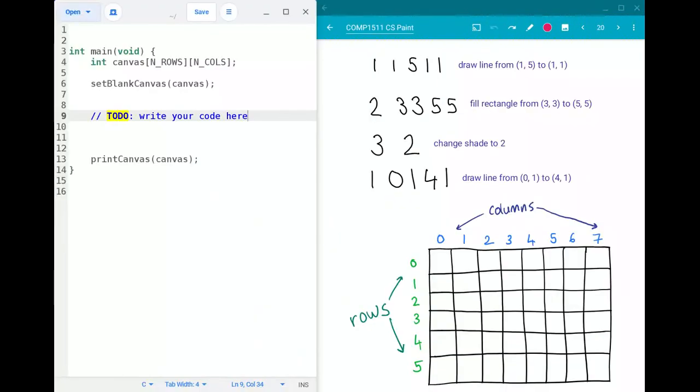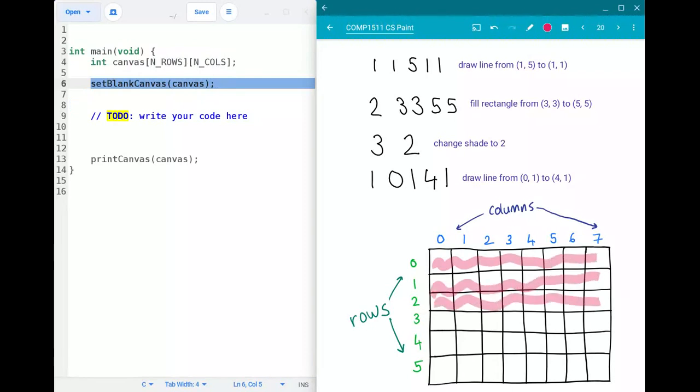So over on the left hand side I've got the main function that we've provided you to get started with. So it starts off with first of all this line here int canvas nrows ncols and so that creates this two-dimensional array in memory that I've drawn over here of size nrows by ncols. It then calls this setBlankCanvas function and we went through that in the previous video about how it goes through and fills in each of the elements in the two-dimensional canvas array with the white color which was the number four.